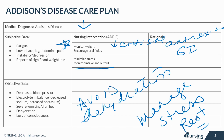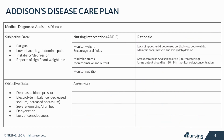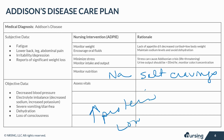Monitor urine for decreased output, with a desired output of greater than 30 mLs per hour. Also monitor the concentration and color of the urine, which may be darker. Aldosterone deficiency causes the kidneys to excrete sodium, which may result in salt cravings. Encourage patients to increase salt intake and supplements as necessary to prevent hyponatremia. Encourage patients to eat high protein and low carb snacks and meals as tolerated, followed by rest periods to prevent fatigue due to hypoglycemia and to facilitate digestion.